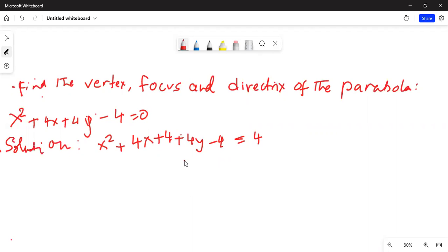Now we will subtract 4y from both sides. This will become x square plus 4x plus 4 and we will also add 4 on both sides. So x square plus 4x plus 4 is equal to minus 4y plus 4 plus 4.